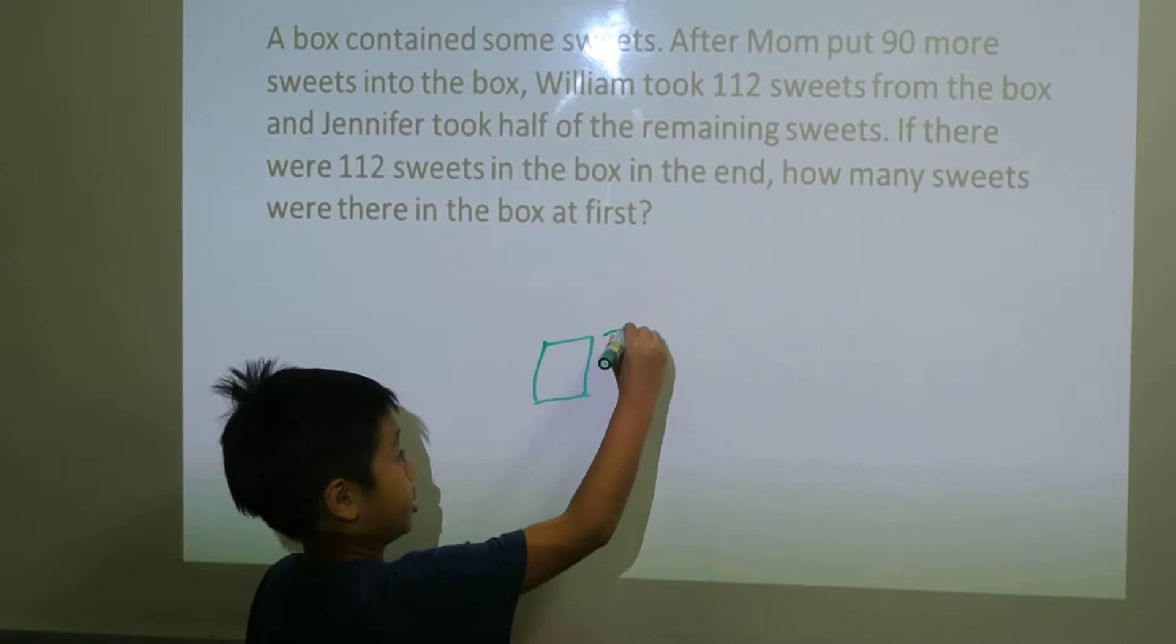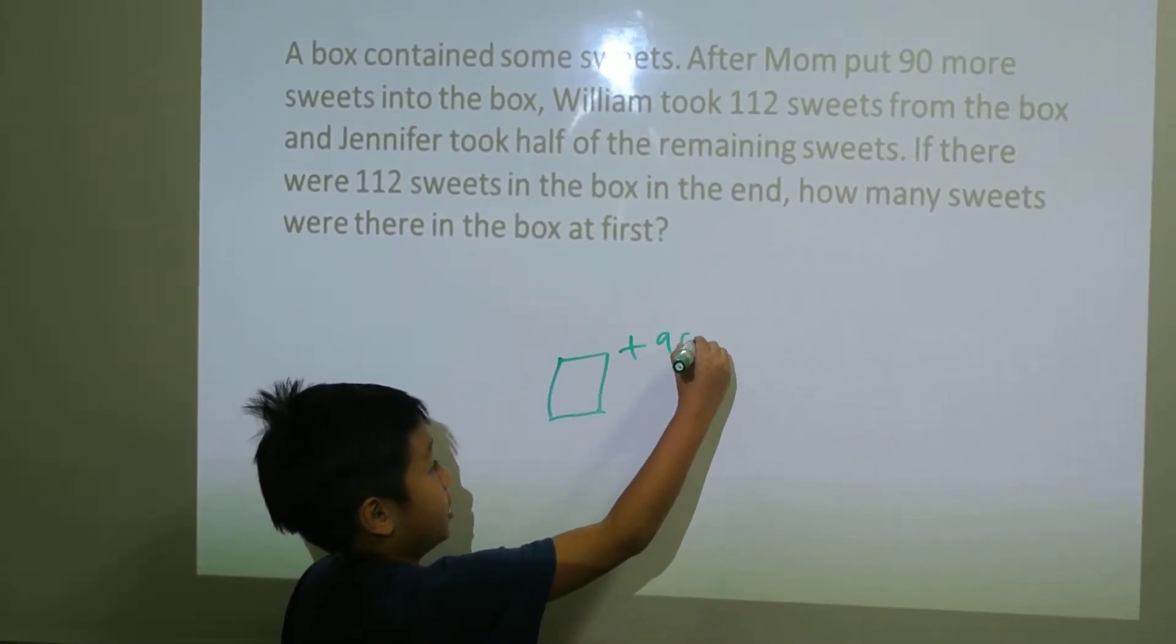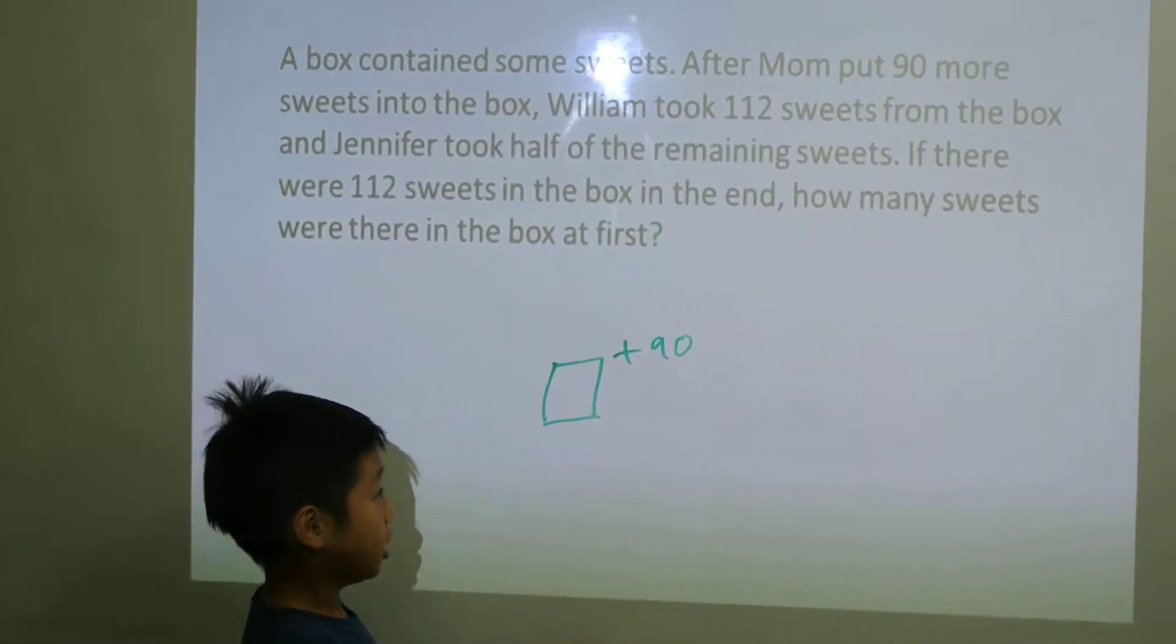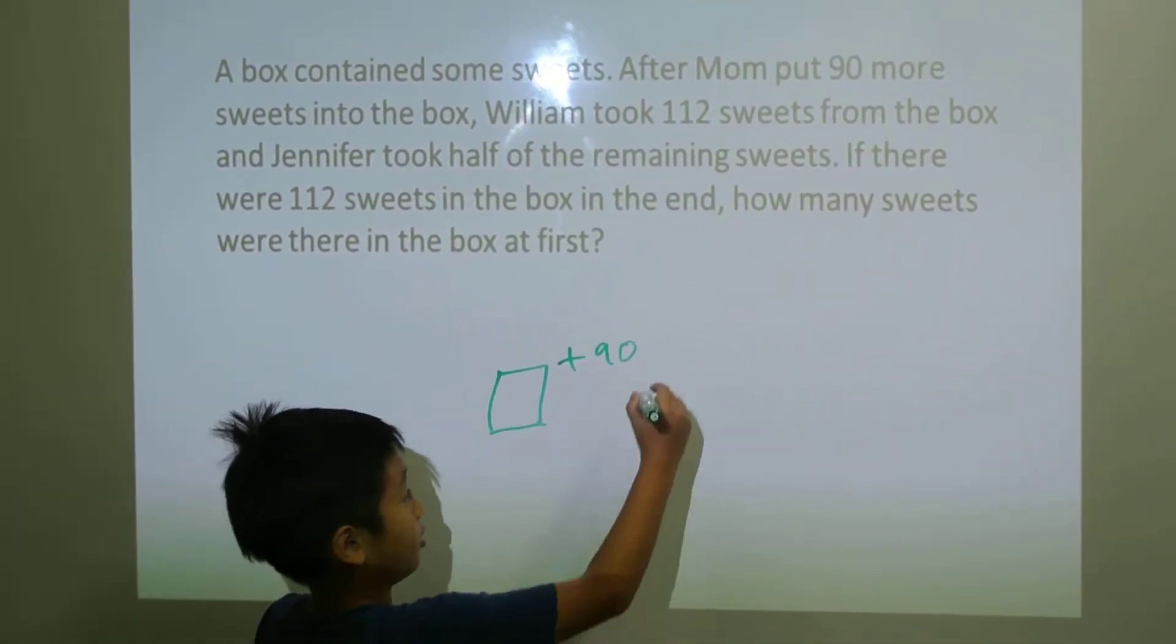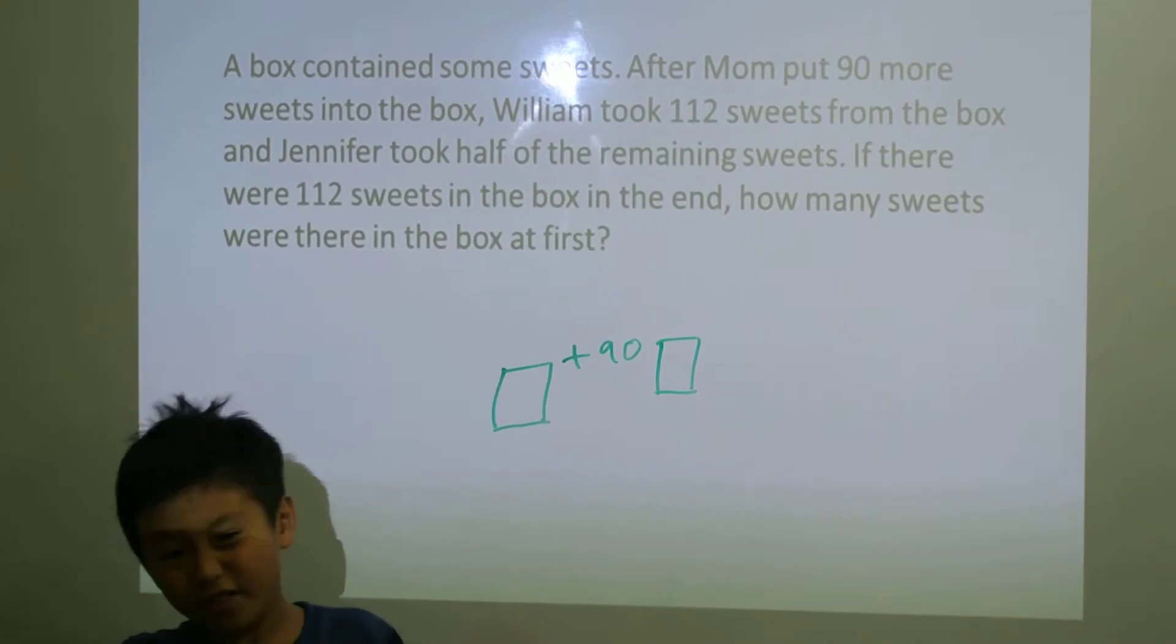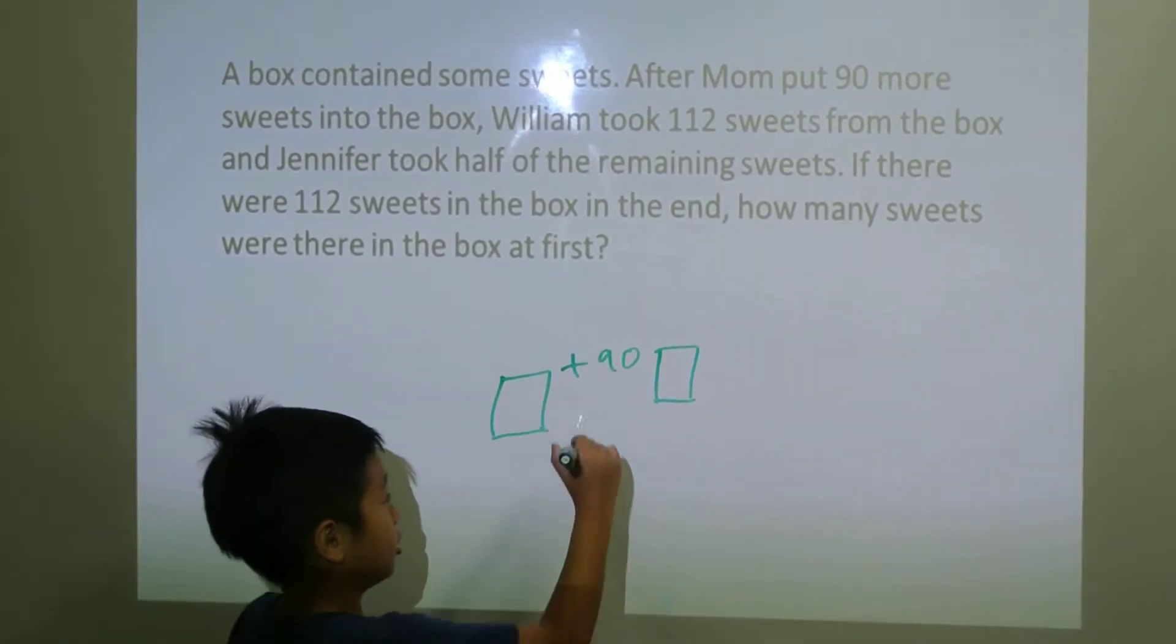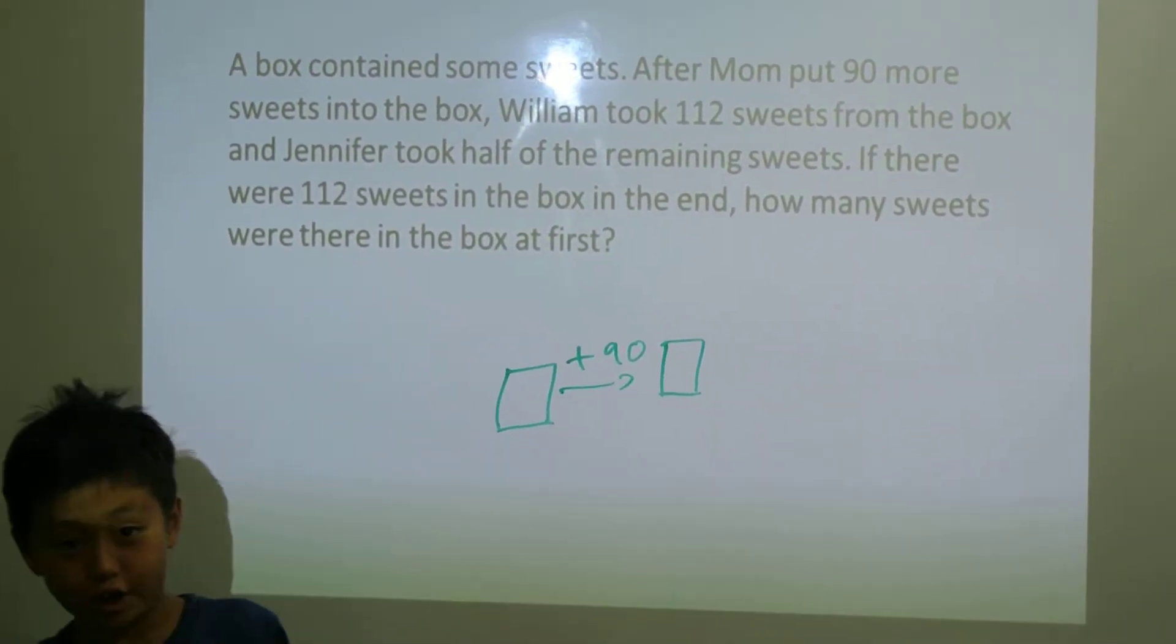So we add 90 because more is add, right? So we add 90. So now we add another one. And I think you should add an arrow too, so that you know the direction you're going to go.